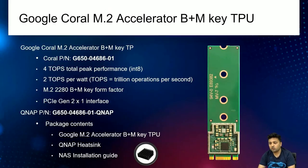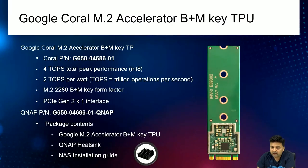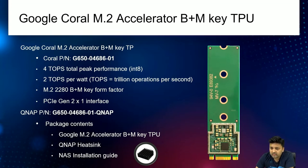For QNAP NAS, we support two types: the M2 PCIe M2 accelerator B+M key and the USB accelerator. The first is the Google Coral M2 accelerator B+M key. Its specifications include four TOPS total peak performance — TOPS meaning trillion operations per second — and two TOPS per watt, so the energy consumed for so many trillion operations is quite efficient.